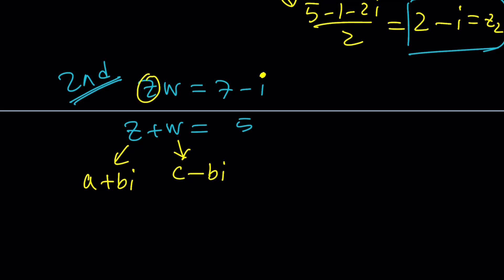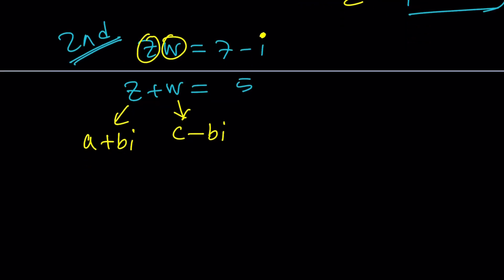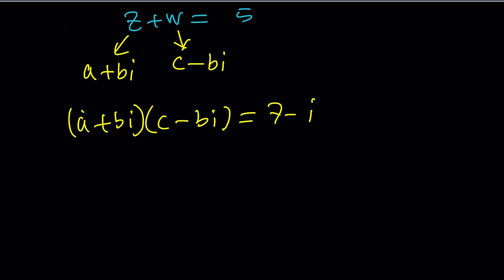Okay. So, what? You've got to plug it in here as well. Let's do it. So, we have A plus BI multiplied by C minus BI equals 7 minus I. Let's distribute them and see what happens. We get AC, and then from here we get minus B squared I squared, which is plus B squared.